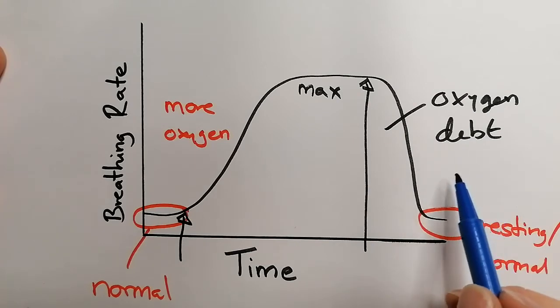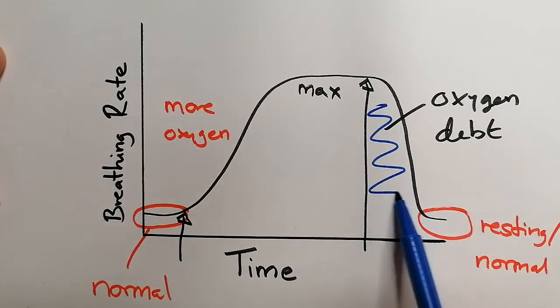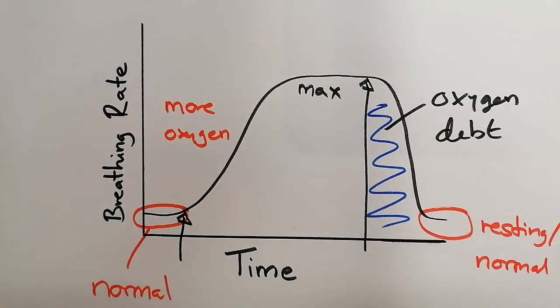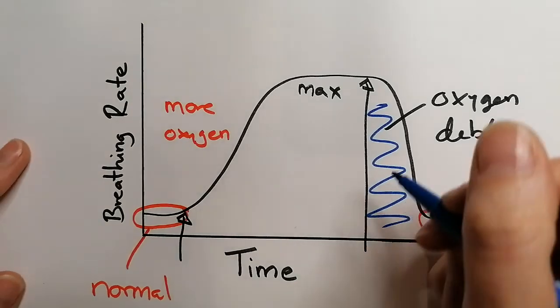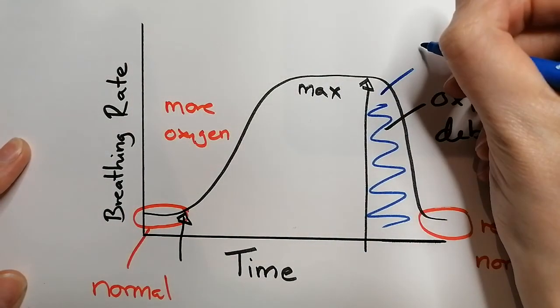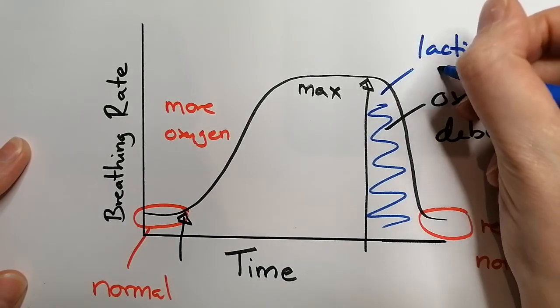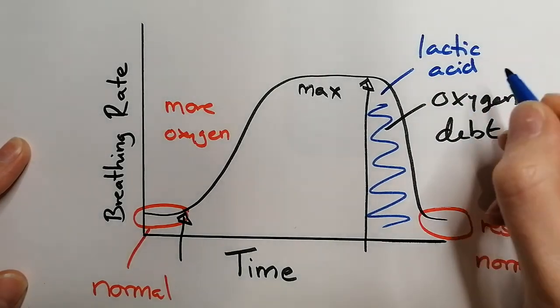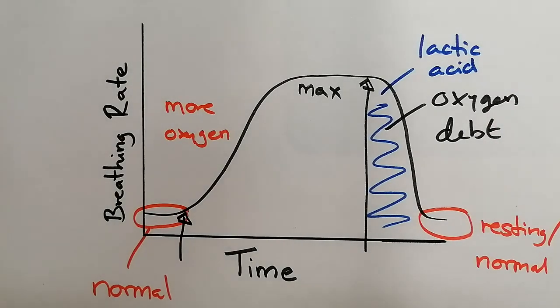So this is what happens here. In this time bit here, we are breathing more heavily than we would normally need to if we were not exercising. But we're breathing more heavily not because we're trying to release energy for the exercise. We're done exercising. Exercising finished here. We're now breathing heavily because we need to break down the lactic acid. So this bit here removes the lactic acid. And the lactic acid is taken away by using oxygen.